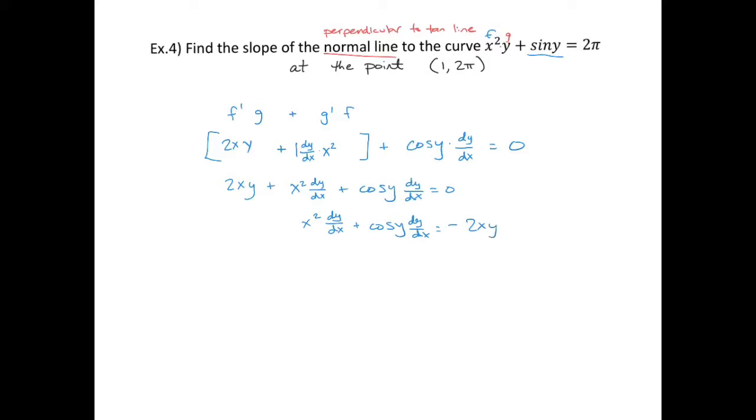We can factor out dy/dx, which would leave us with x² + cos y, and then I can divide by that: x² + cos y. So dy/dx = -2xy/(x² + cos y).